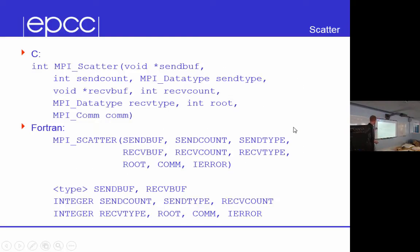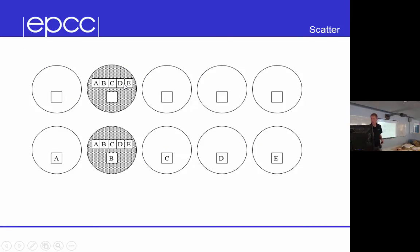Now, the scatter call looks like this. And one thing I'd say about this is what tends to really confuse people are these counts in the scatter call. The counts are the sizes of the small messages. And what I mean by that is the send count is the number of elements the root will send to an individual process. And the receive count is the number of elements that a process is going to receive from the root. So if we go back to my example here, the send count and the receive count would both be one.